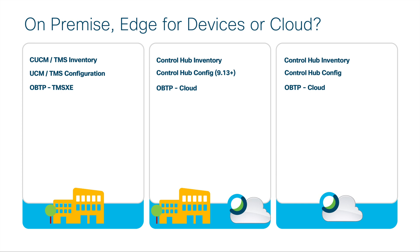One of my favorite features is one button to push. On-premise, you have to work with TMS XE to get it hooked into your Exchange environment. In the cloud or in a hybrid Edge for Devices scenario, you can actually get that through the cloud. So if you're an Office 365 user, you can do all of your calendaring in the cloud exclusively using Control Hub and Office 365.